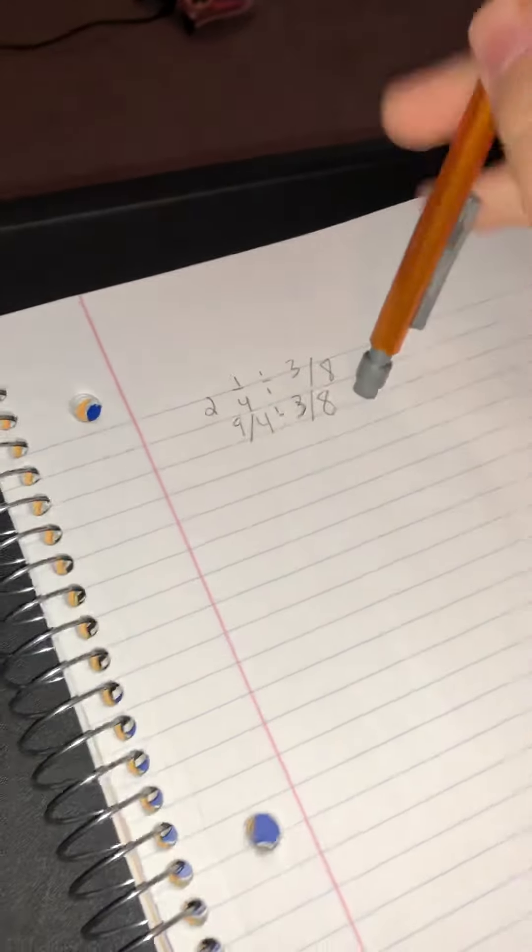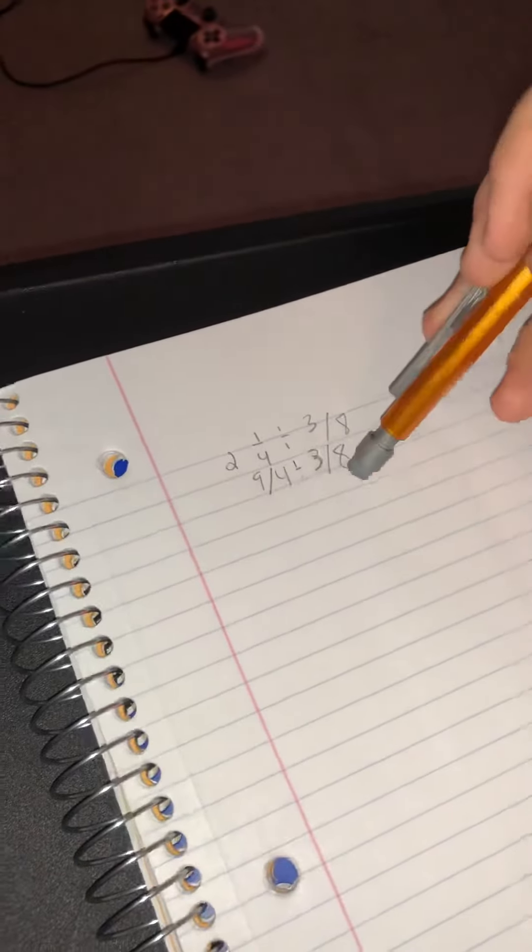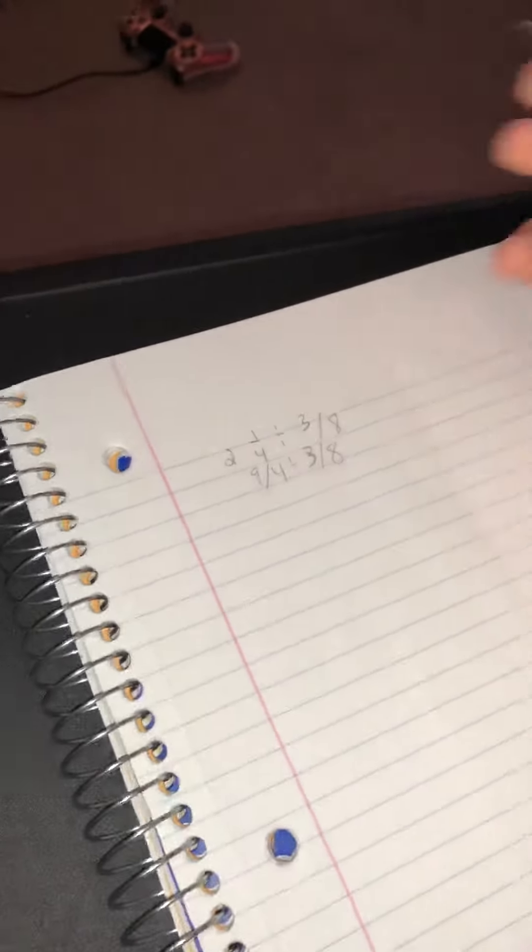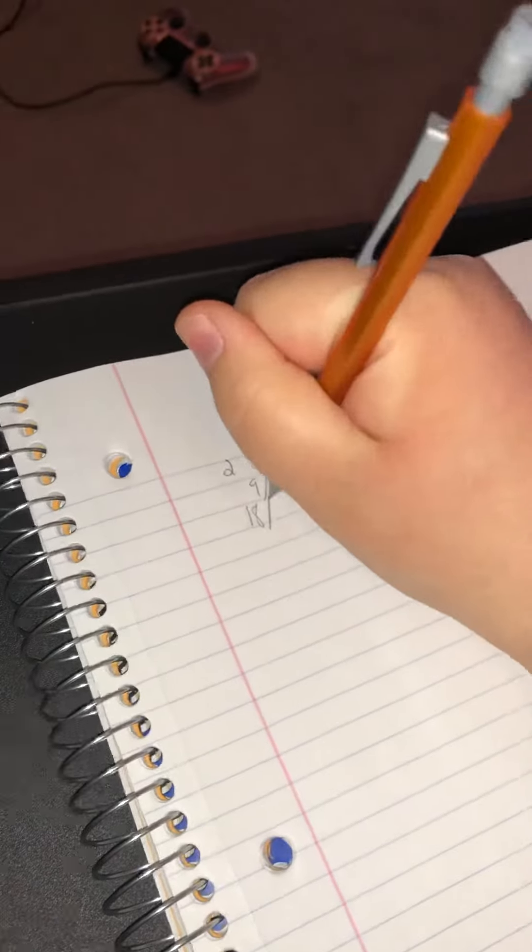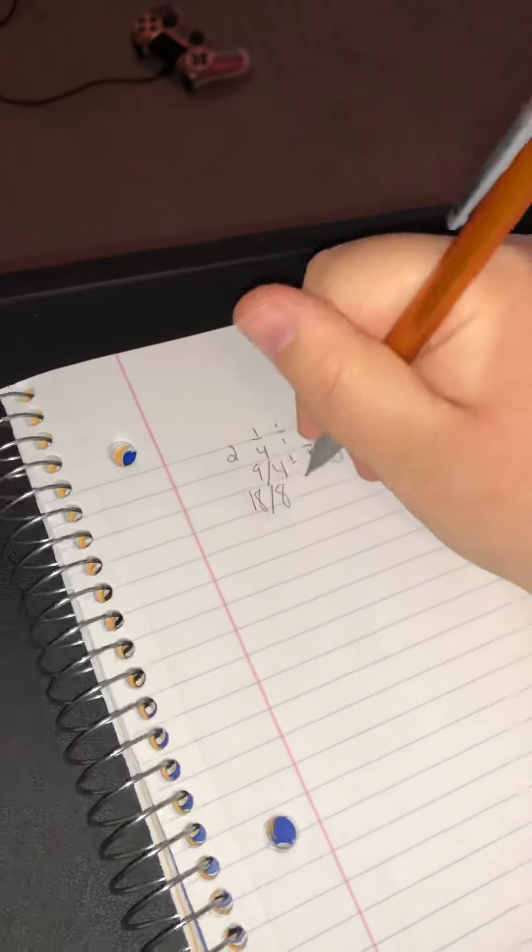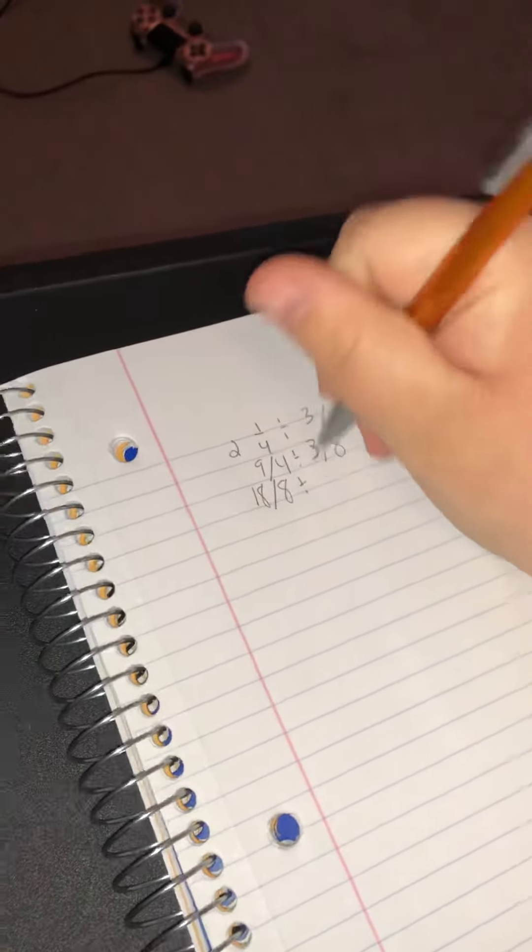Not changing that at all. And then what I'm going to do is get a common denominator so I can draw my box. So we got 18/8 divided by 3/8. Alright, so our common denominator is going to be 8.